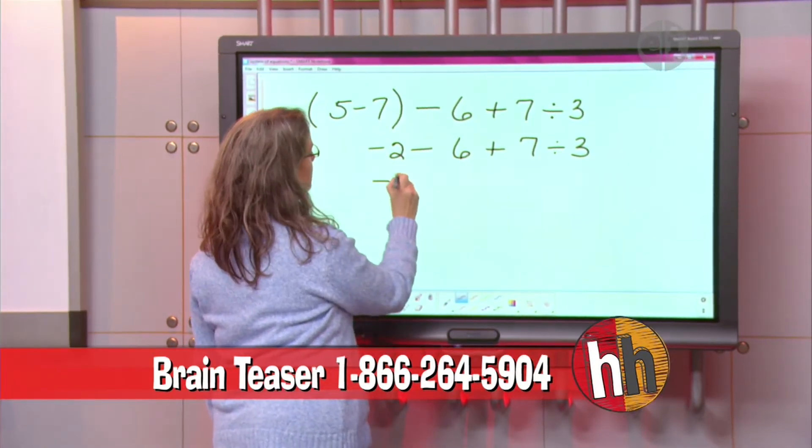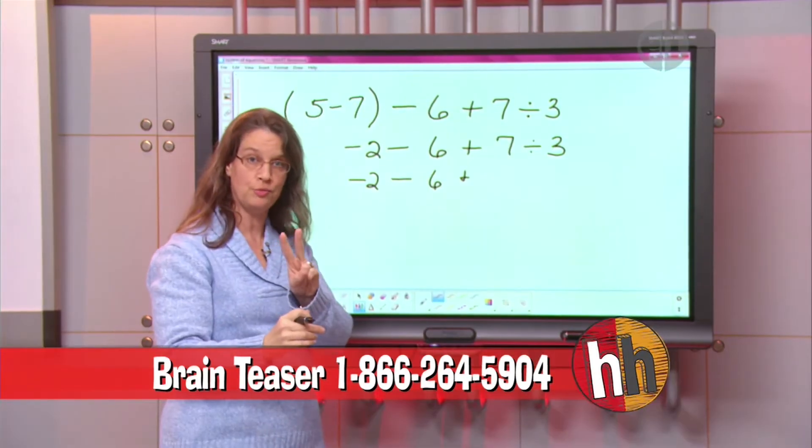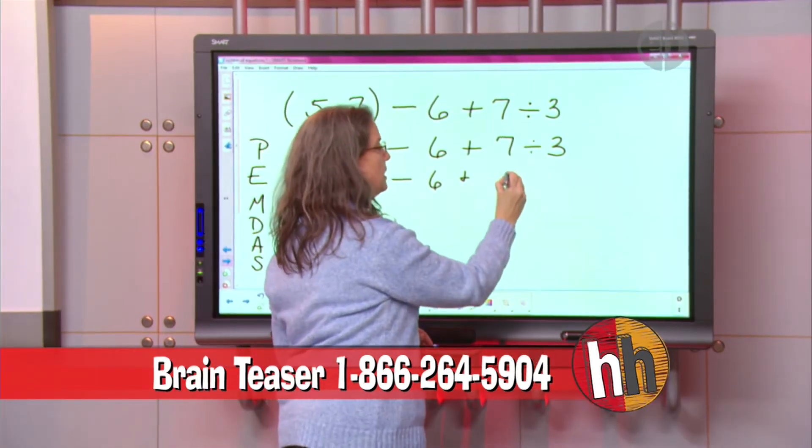So what I would have my kids do is write this all down. And now 7 divided by 3. We know that there are two 3s in 7, so we'd write the big 2.